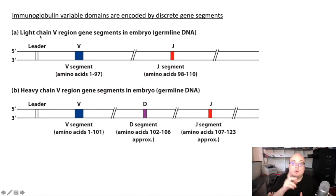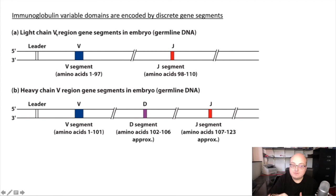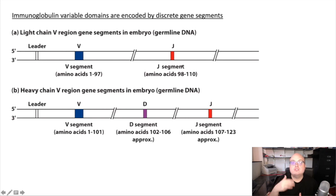Immunoglobulins have both light chains and heavy chains. Since we're talking about diversity in antigen recognition, remember that the part of the immunoglobulin that recognizes the antigen is the variable region. The light chain variable regions in the genome encode two different types of segments which can be combined: a V-segment, or variable segment — which is different from the variable region — and also a J-segment, or joining segment.